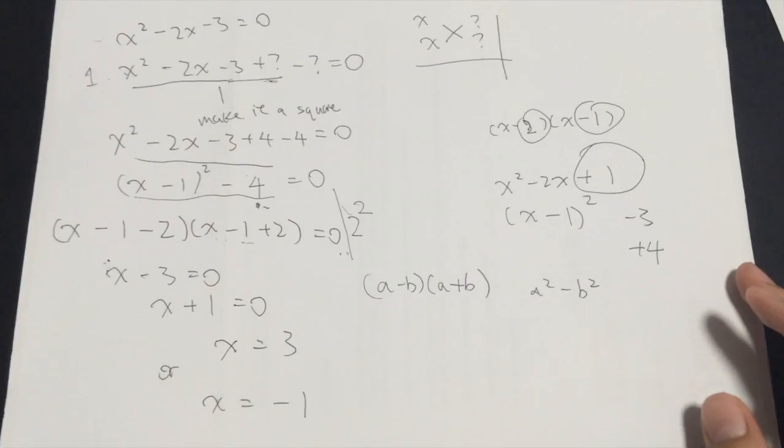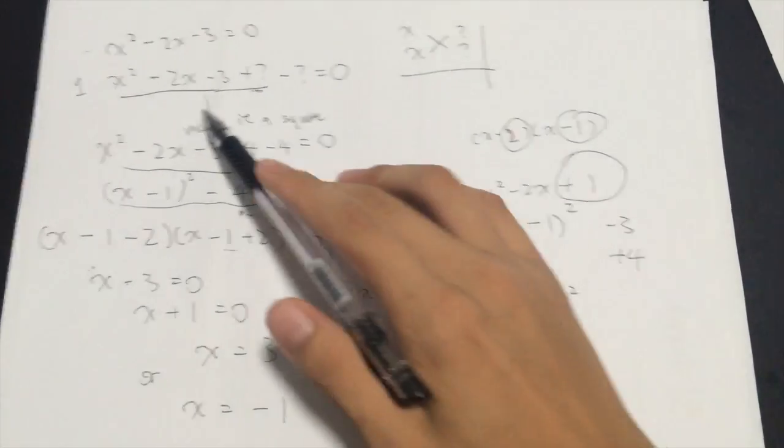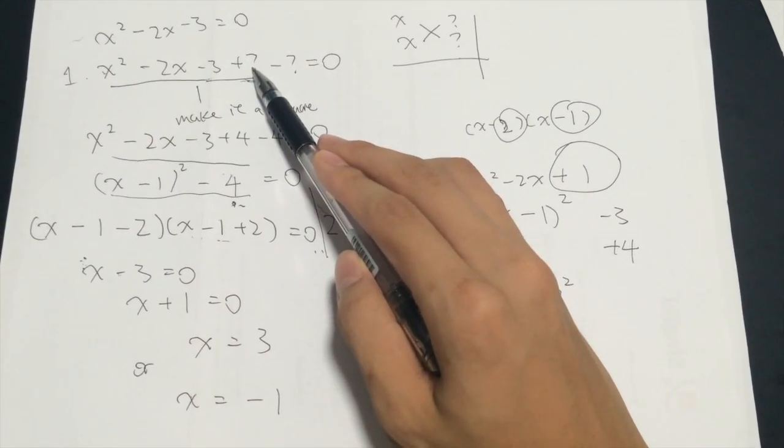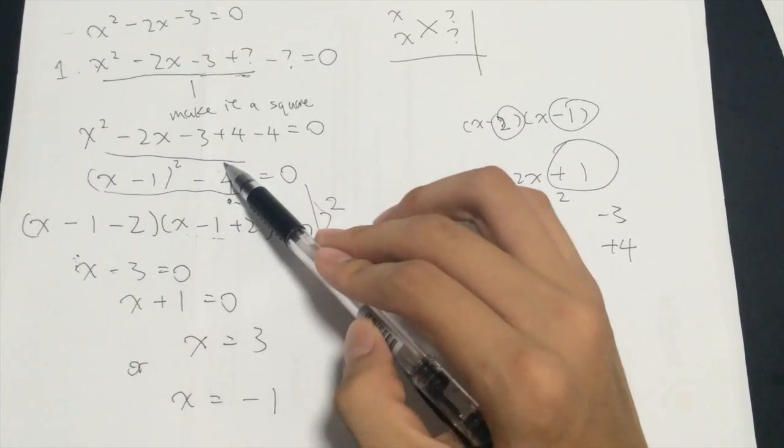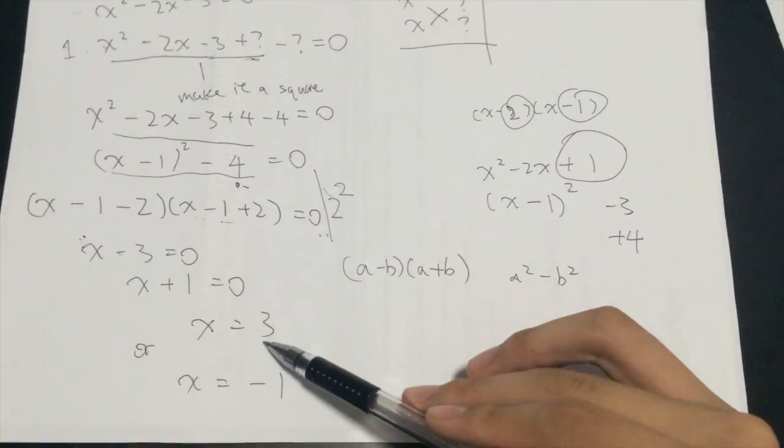So that's the basics of completing the square, where you first have to make this equation a square by adding a number to the back and minus it off later. And you have to try to get the difference of two squares to continue on to find the answer at the back.